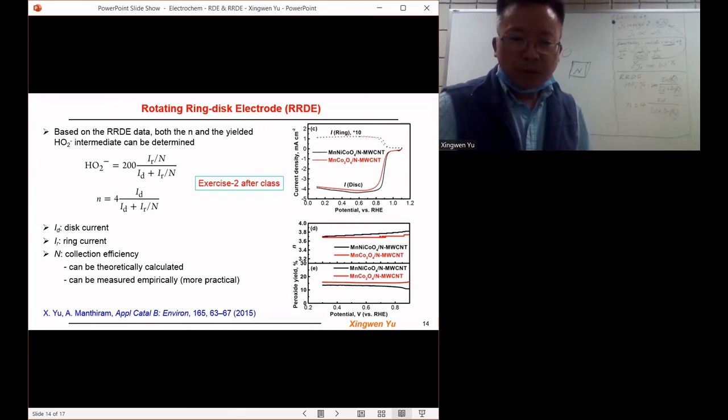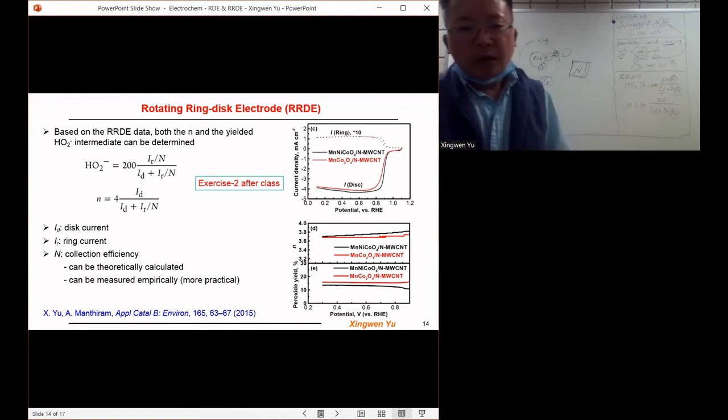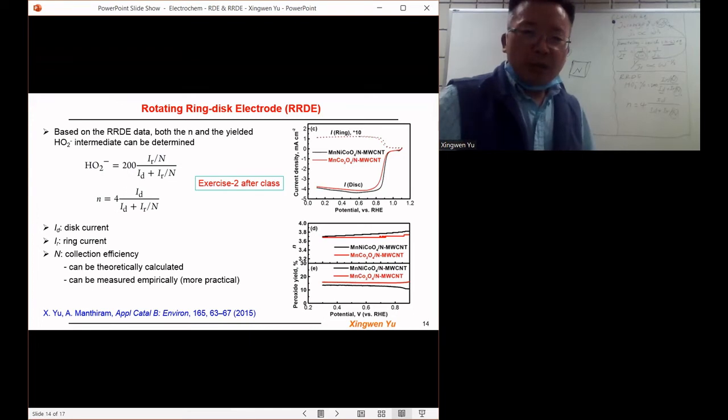The top plot, in the top plot on this slide, the solid line is the current we obtained from the disk. The dashed line is the current density we obtained from the ring electrode.